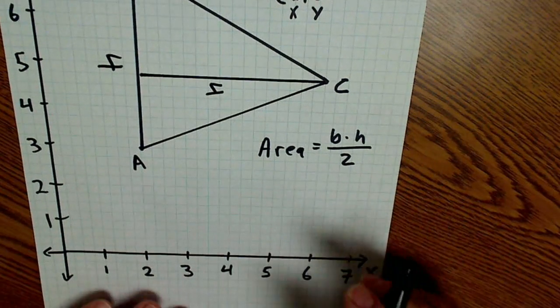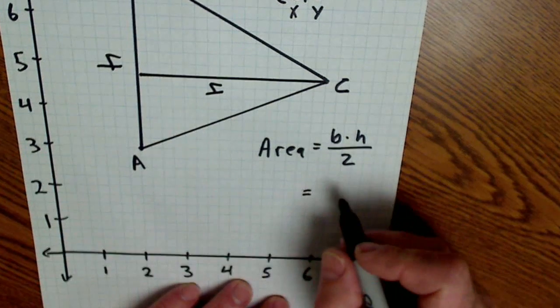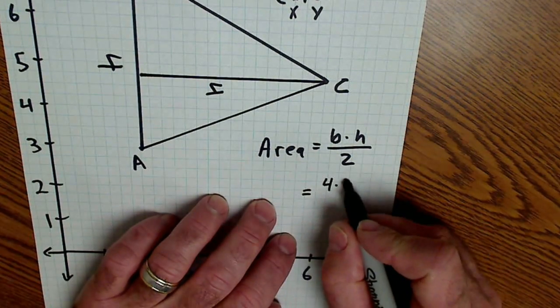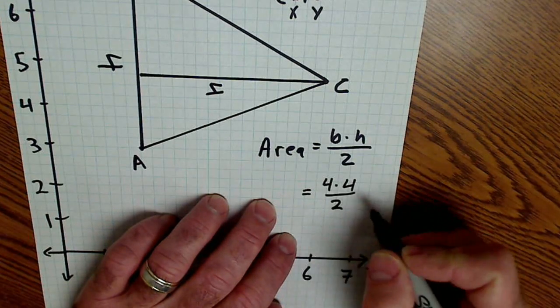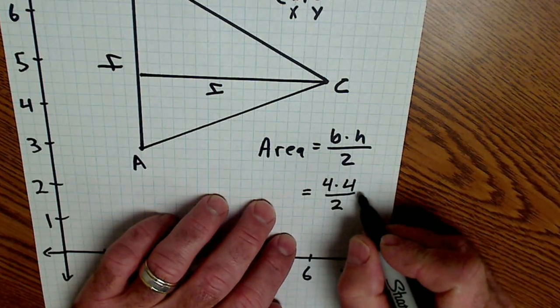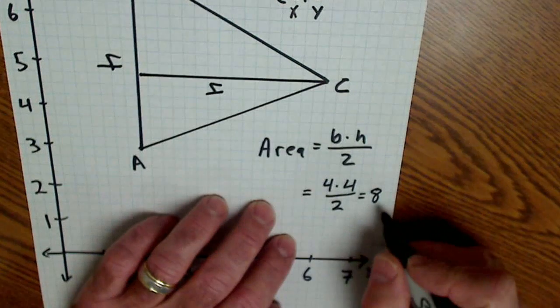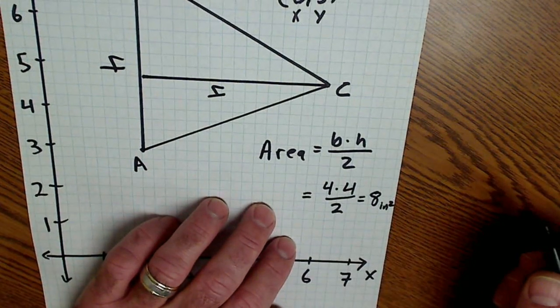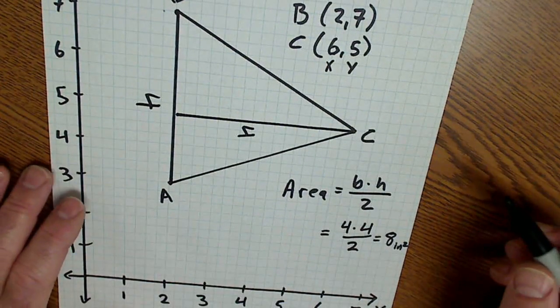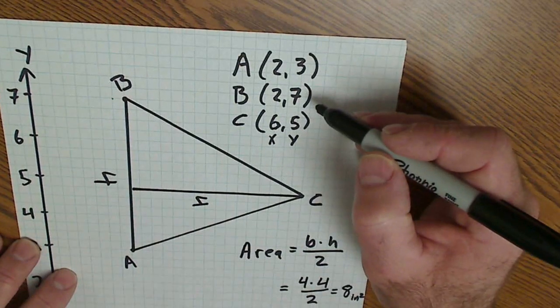So the area of this triangle is base 4 times height 4 divided by 2. 16 divided by 2 is 8 square inches. So that's the area of the triangle and the Cartesian coordinate system, graphing coordinates.